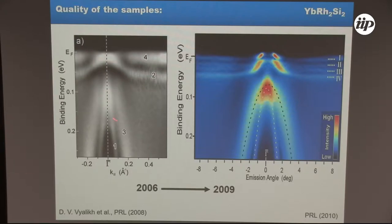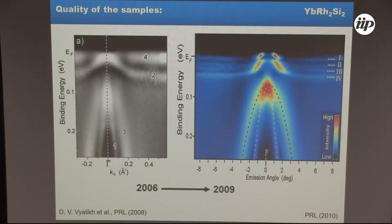I just want to say this was actually a really long journey between 2006 and 2009 when we arrived at these images. For each beamtime we took different sets of samples prepared in different ways by Cornelius, and finally we are now able to analyze this kind of quality material. The crystal growth procedure can be attributed to many systems of this family, which also makes life easier for the future.